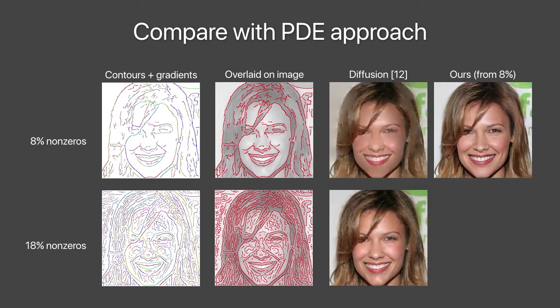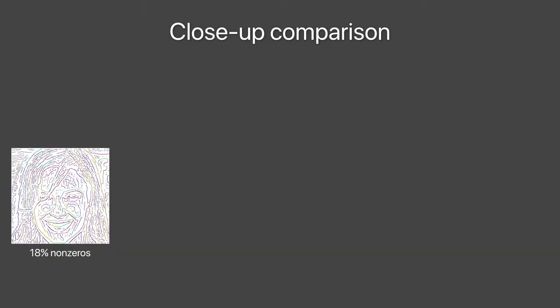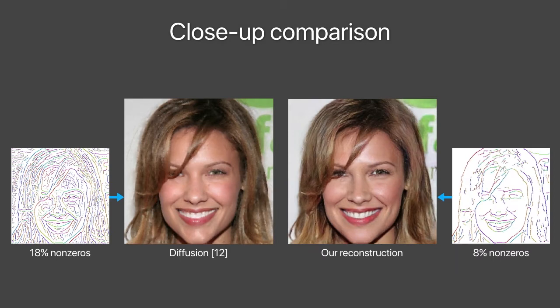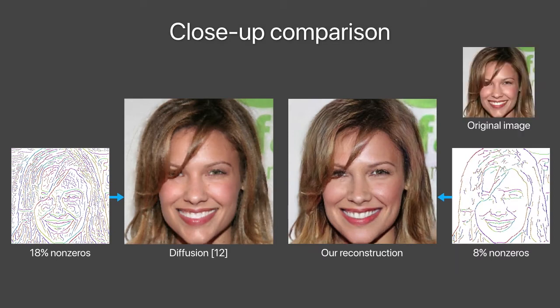We show that by using a deep generative-based model, we can overcome these limitations and get high-quality reconstructions with significantly less information. Here is a close-up comparison. Our reconstruction from only 8% of the contours and gradients contains more details and sharper edges than the diffusion results from 18% of the contours and gradients.